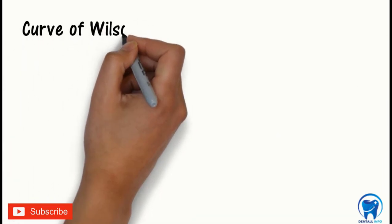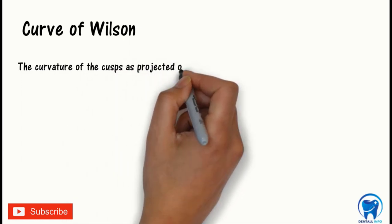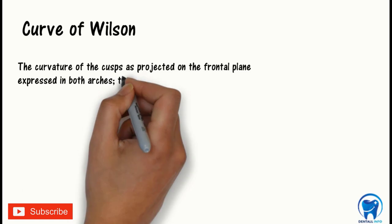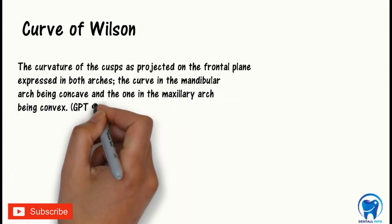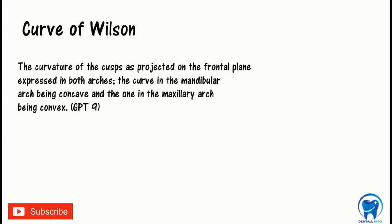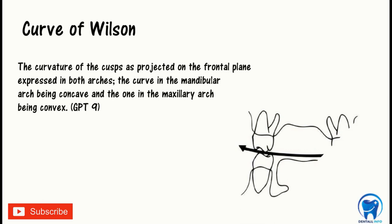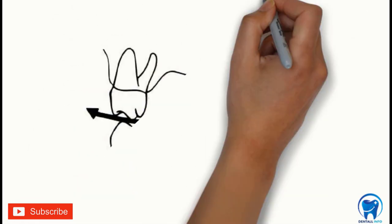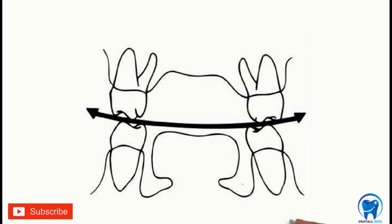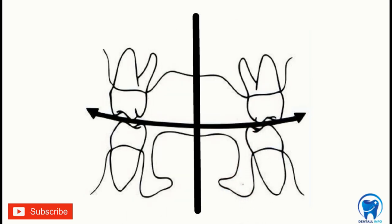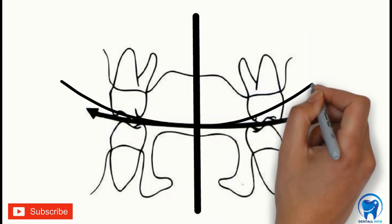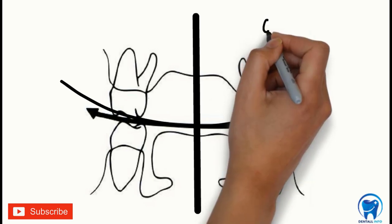Now let's discuss the next curve which is the curve of Wilson. It is defined as the curvature of the cusps as projected on the frontal plane expressed in both arches. The curve in the mandibular arch being concave and the one in the maxillary arch being convex, as per GPT-9. Now this is the view as projected from the frontal plane. The curve extending mediolaterally here touching the cusp tips of maxillary and mandibular teeth is the curve of Wilson.